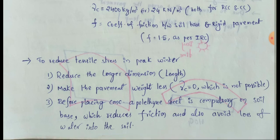Before placing concrete, a polythene sheet is compulsory on the soil base, which reduces friction and also avoids loss of water into the soil. Before placing concrete on the soil, the polythene sheet must be placed.